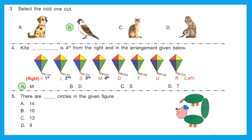Question 5: there are dashed circles in the given figure — we have to count the number of circles. Circle 1, circle 2, circle 3, 4, 5, circle 6, 7, 8, and 9. In total there are 9 circles in the given figure. Option D is the right answer.